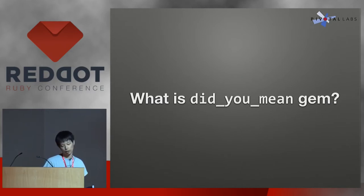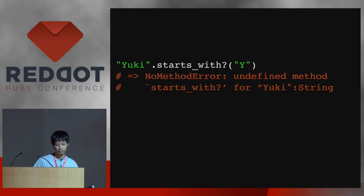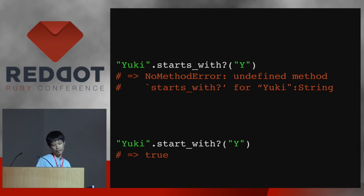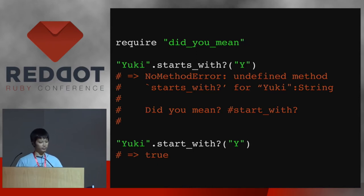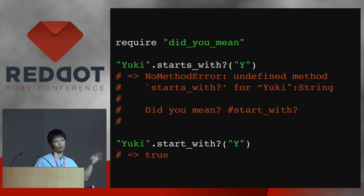Matt actually talked about it yesterday already, but let me give you a quick introduction because some of you might not have used it before. So let's say you want to check if a string object starts with a specific letter. Maybe you can use a startsWith method. But it doesn't work, because it only responds to startWith, not startsWith — because you are now using Rails, and more specifically ActiveSupport. But if you use DidYouMean gem, as soon as you get an error, it will automatically look for what you really wanted to call and suggest it to you. So you don't have to waste your time Googling or going to RubyDoc.